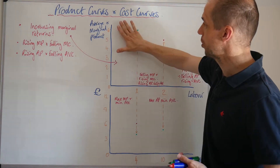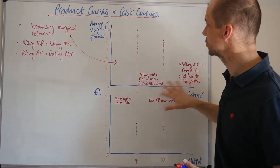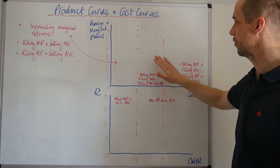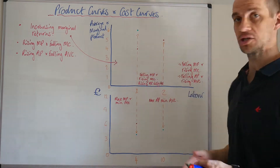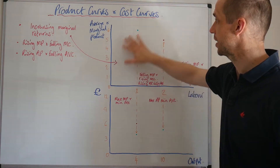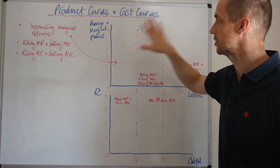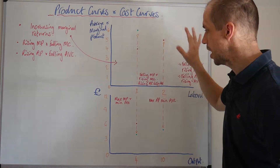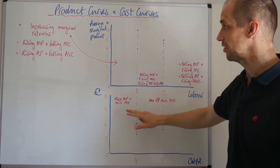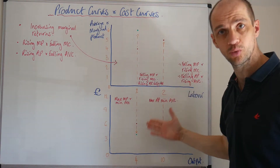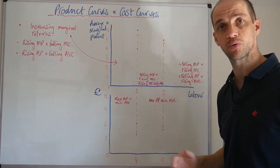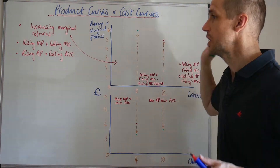First up on this graph we've got average and marginal product being reflected, so we'll focus on those average product and marginal product curves. Down here meanwhile we have the marginal cost and the average variable cost also being reflected.